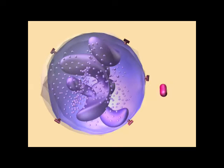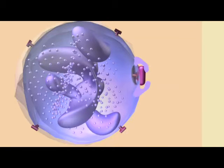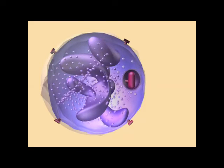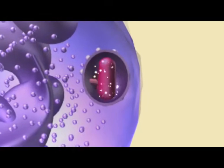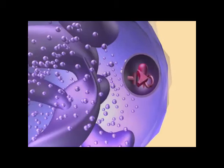Eukaryotes developed a new flexible cytoskeleton, which among other things allowed them to perform phagocytosis, where they could engulf solid particles to be used as food, including other cells.